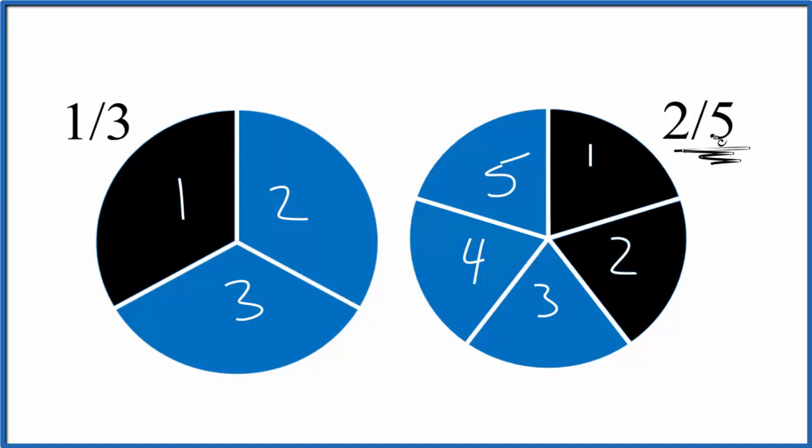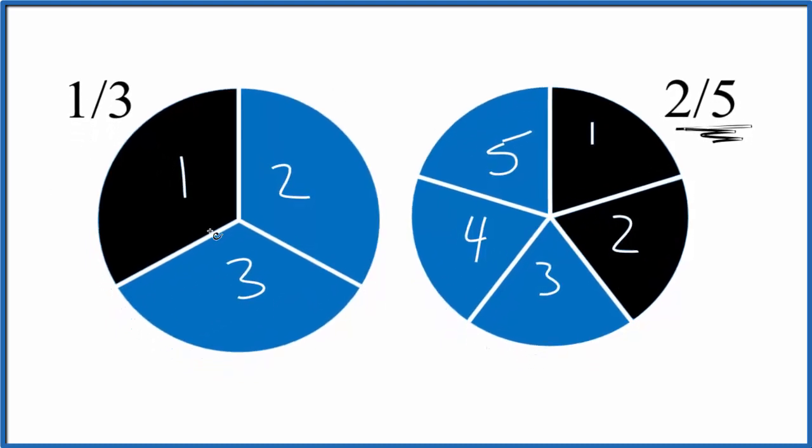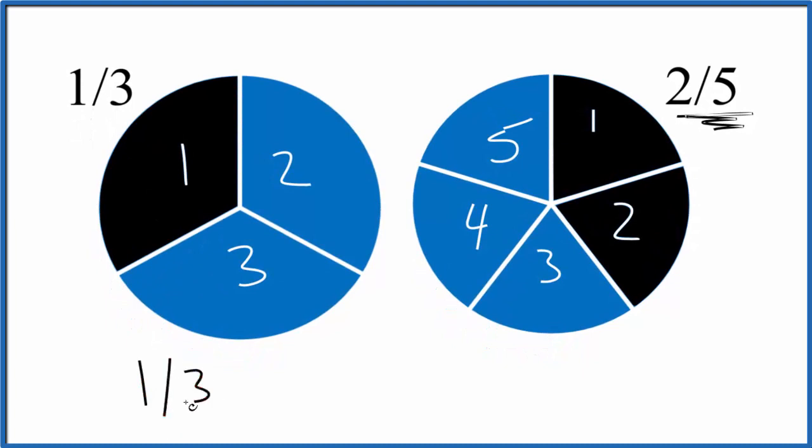But if we converted this to decimals, divided one by three and two by five, that might help. So let's do that. One divided by three, that equals zero point three, and that number repeats. Two divided by five, that equals zero point four.